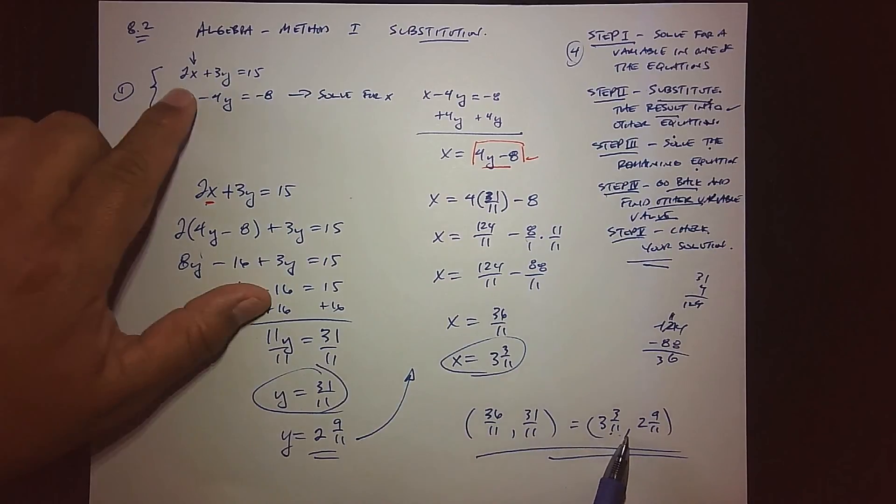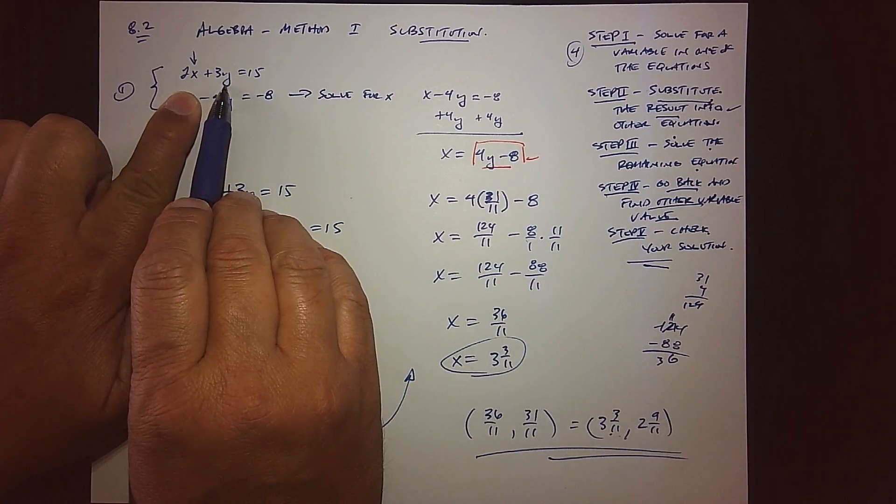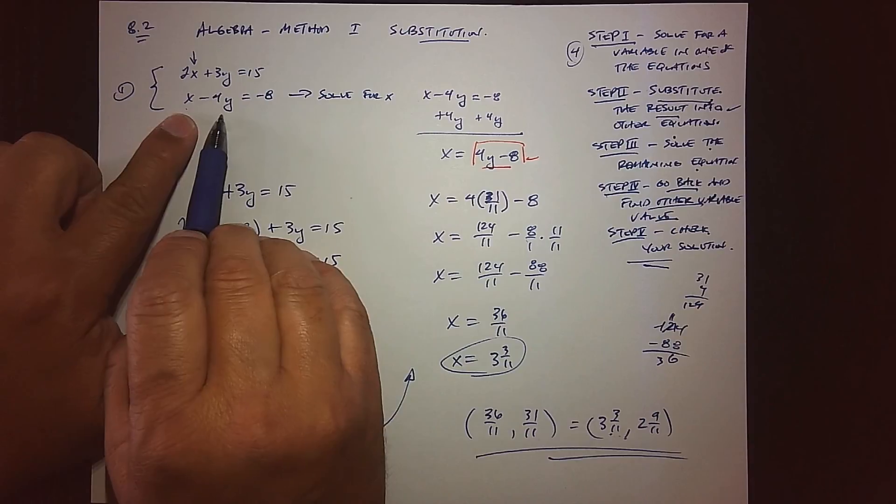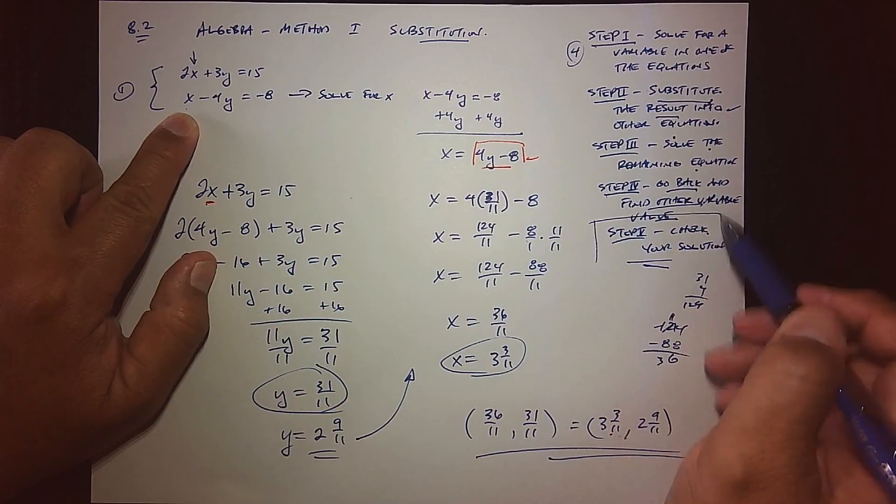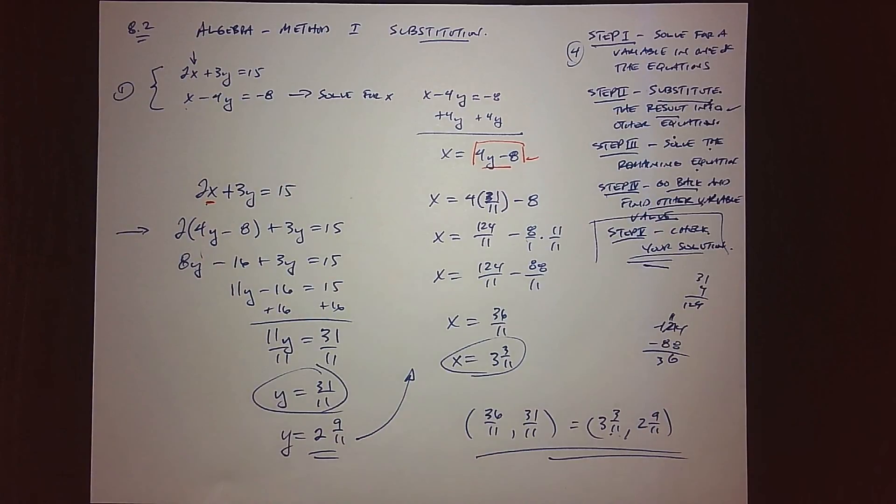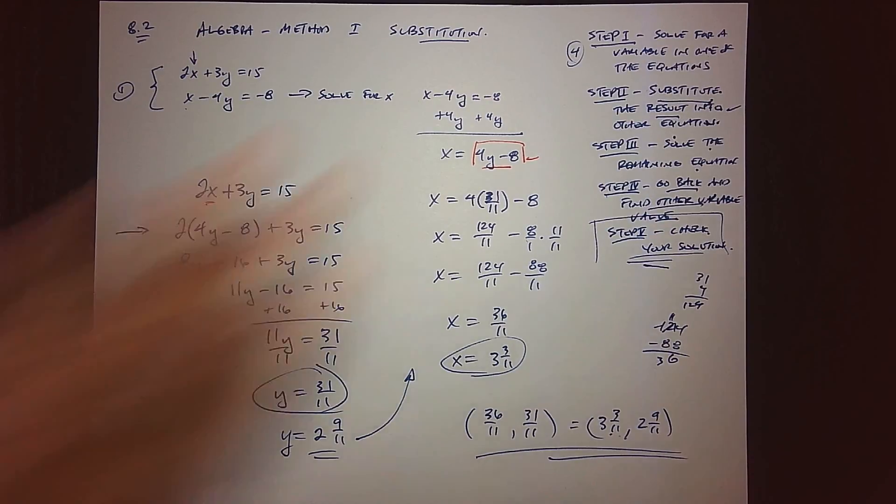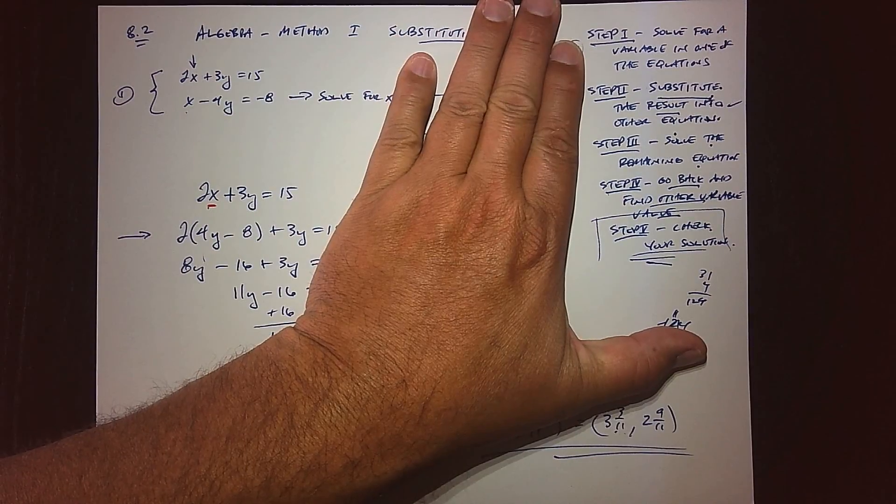Step 5 is to check our solution. I'm going to focus on the actual process itself, but to check if this works I'll plug the x and y coordinate here and get 15, or plug the x and y here and get negative 8. I'm not going to show a lot of the checking, but that's how we would check it. What's important are those first four steps.